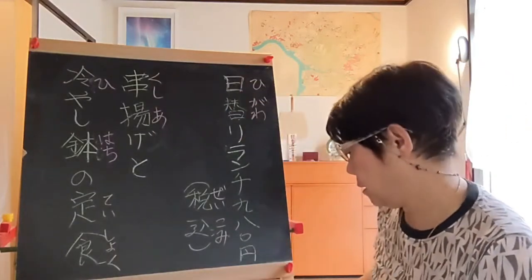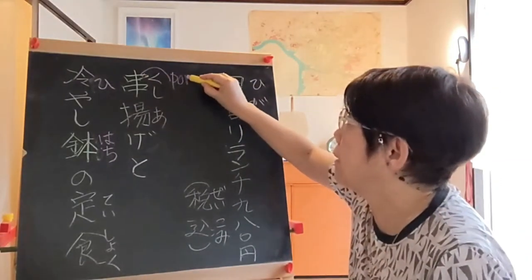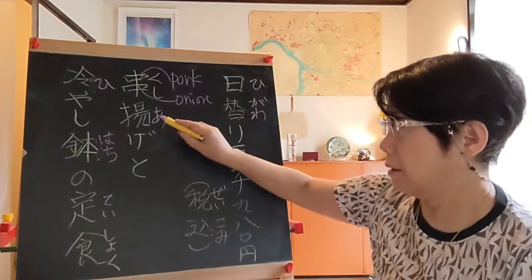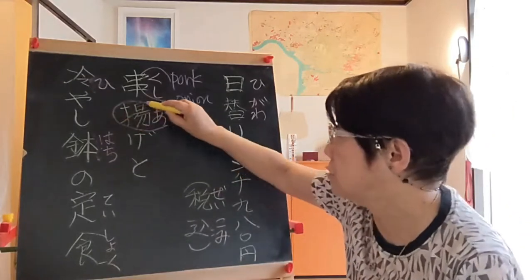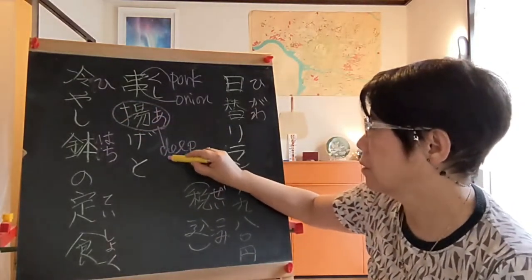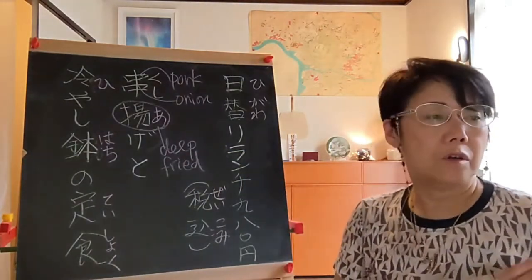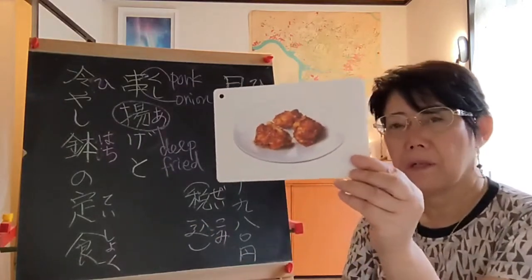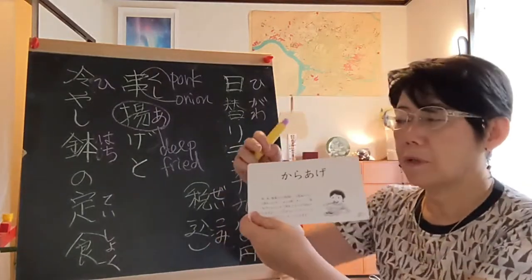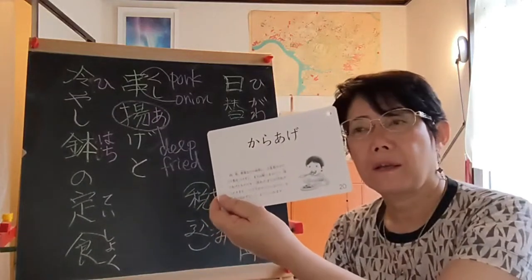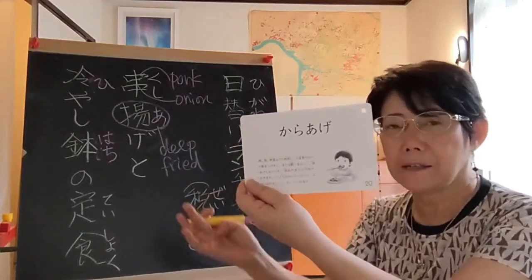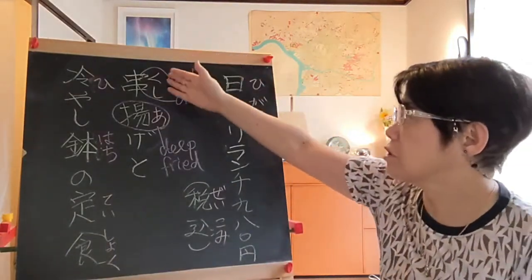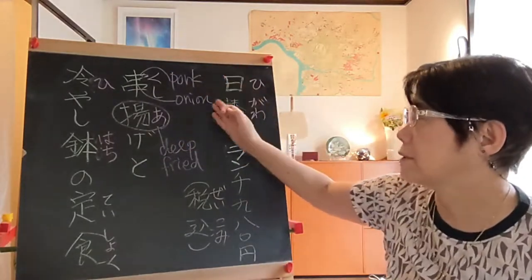Kushi-age usually uses pork and some vegetables like onion or green pepper. The kanji 'age' means deep fried. You may know karaage — fried chicken — where 'kara' refers to an ancient Chinese dynasty, so karaage means Chinese-style deep fried. But kushi-age is usually pork and vegetables, deep fried.